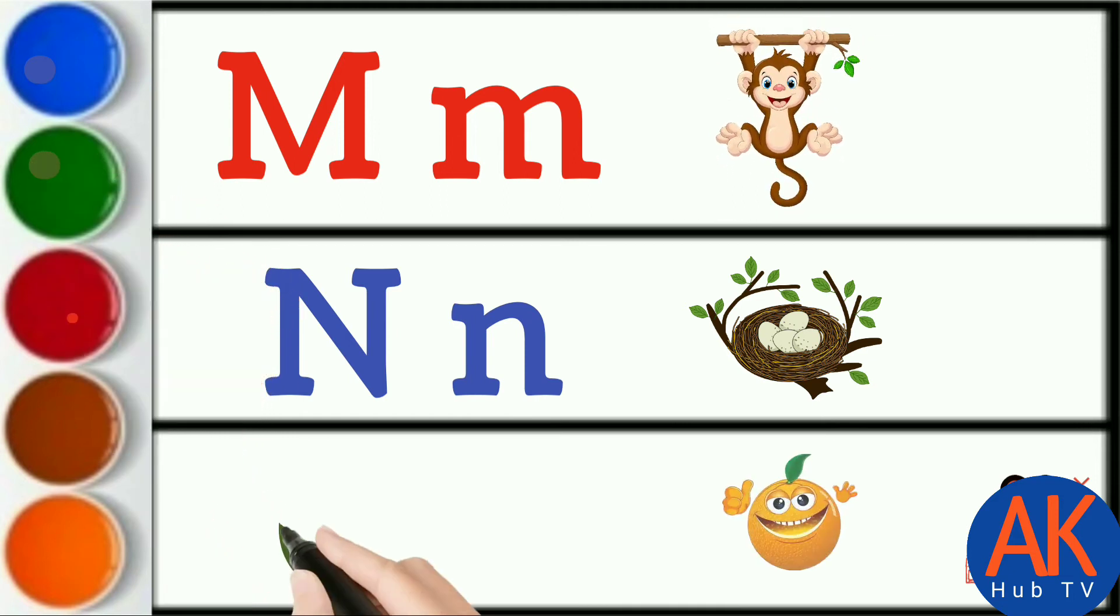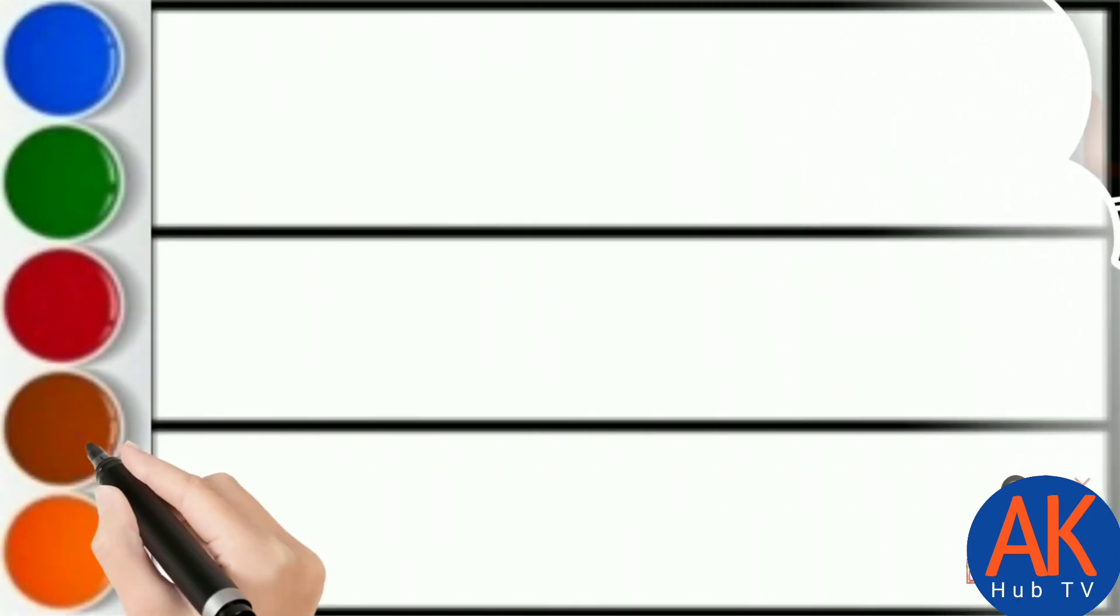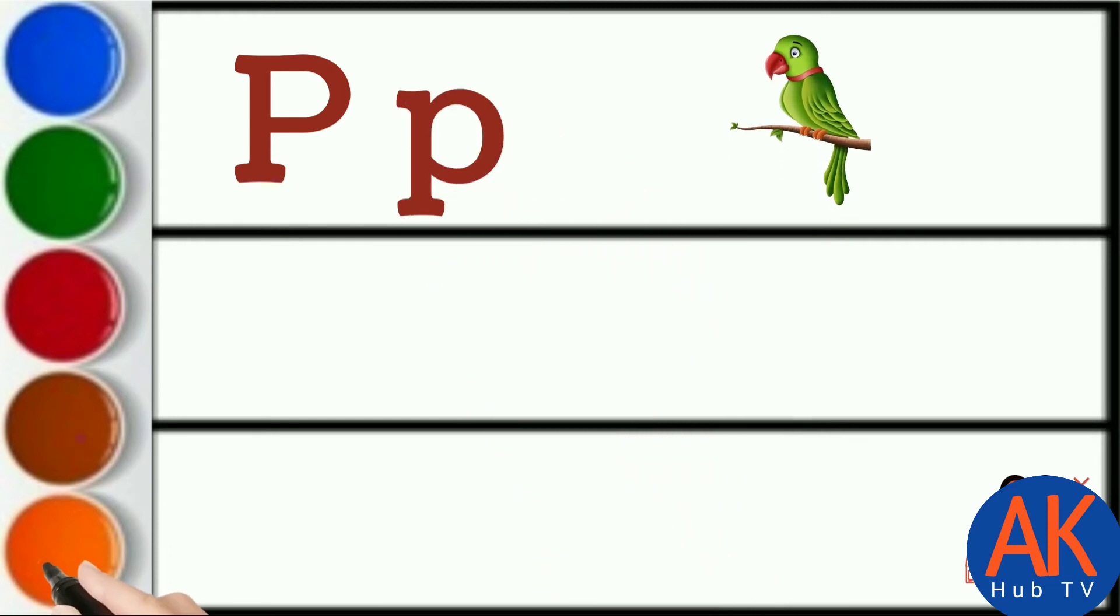Green color O. O for orange. Brown color P. P for parrot.